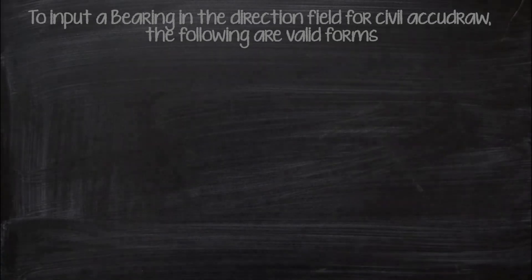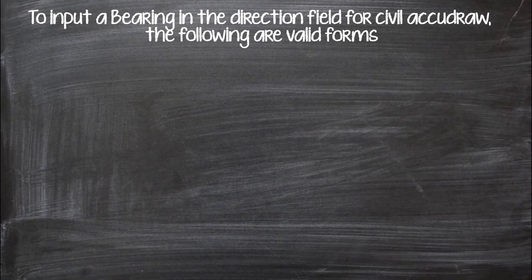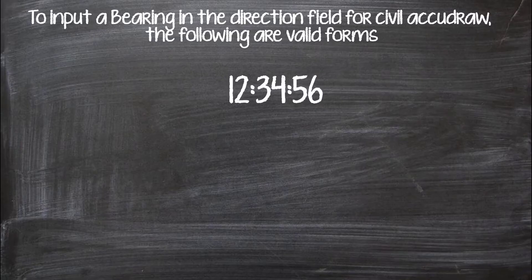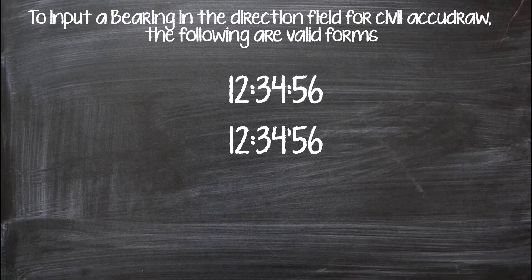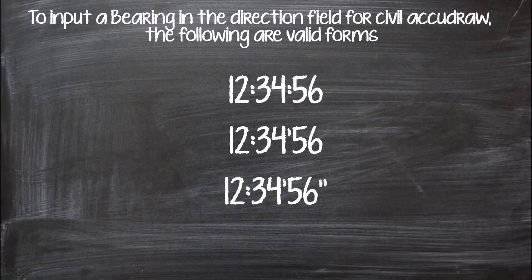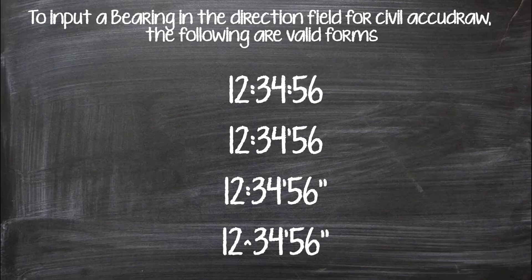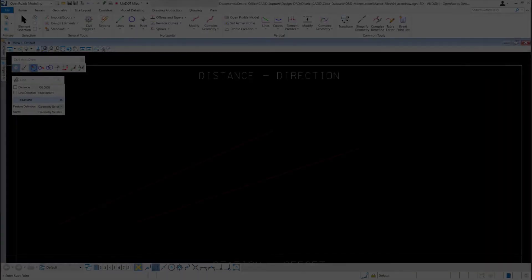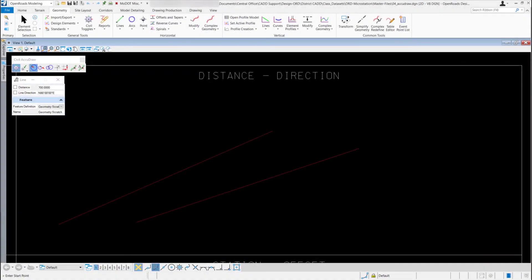To input a bearing in the direction field for Civil AccuDraw, the following are valid forms: you can use colons between degrees, minutes, and seconds; a colon between degrees and minutes and a single quote between minutes and seconds; a colon between degrees and minutes, single quote between minutes and seconds, and double quotes to end the seconds; or a caret between degrees and minutes, single quote between minutes and seconds, and a closing double quote. The caret symbol is just shift+6. Those are just some of the ways you can enter a bearing in the direction field.